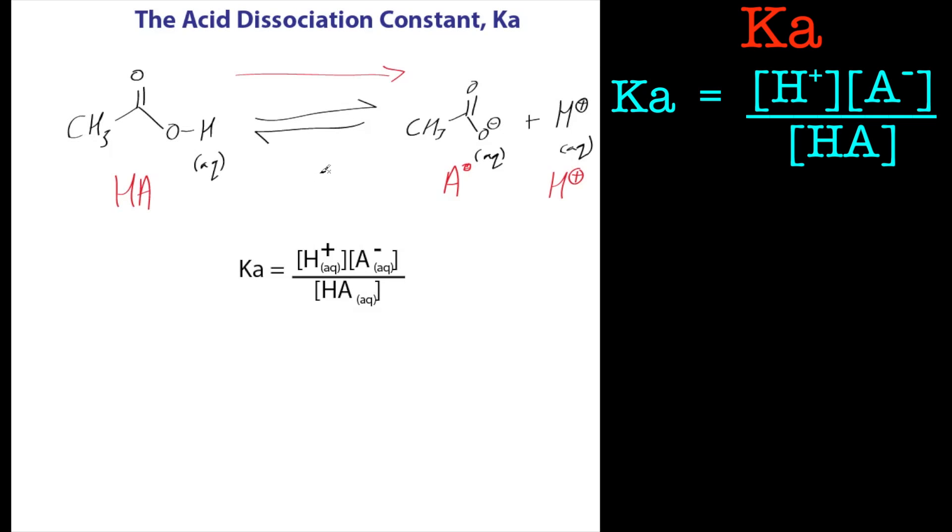So let's have a look at this equilibrium and see what this means. So if we get a large Ka, so if Ka is large, what does that mean? Well, that means that this value on top is large. So this is larger than this one. If they were equal, then Ka would equal one. So you have an equal number of these and an equal number of this.